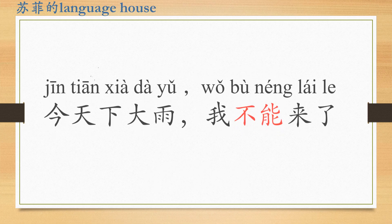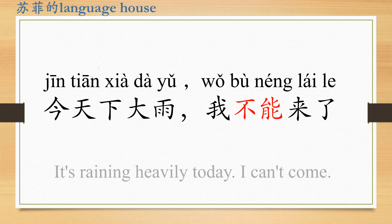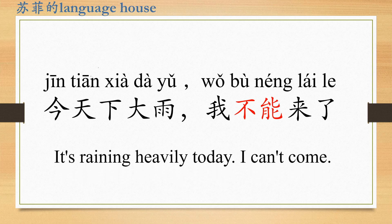When we use 不能 to refuse a request, we often give a reason why we cannot do that. For example: 今天下大雨，我不能来了. 今天 means today, 下雨 means raining, 大雨 means heavy rain. 今天下大雨，我不能来了 — It's raining heavily today, I cannot come.